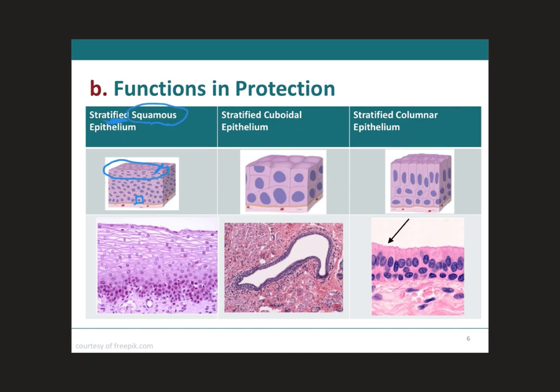This type of epithelium is found, for example, in the skin. As these basal cells divide, they start to move up toward the surface and away from their supply of blood, which is down here in the connective tissue. Therefore, they become dehydrated and less metabolically active as they shrink in size. This is why the cells on the surface are flat and not cuboidal. We will talk in more detail about this type of epithelium when we get to the integumentary system, which is our next module.